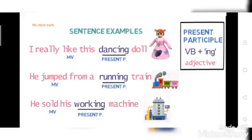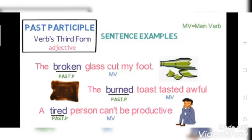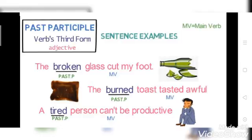And working present participle है यहाँ पे. यहाँ पे आप verb के साथ ing यूज़ कर रहे हैं, and जो verb यहाँ यूज़ होंगे वो basic form होते हैं, means root form होता है. Just last sentence में verb है work, so work plus ing — so it is your present participle. Now coming to past participle: यहाँ पे verb आपका third form में होगा, and it will function like adjective. 'The broken glass cut my foot' — broken is past participle, and cut is main verb. 'The burnt toast tasted awful' — burnt is your past participle, and tasted is main verb. 'A tired person cannot be productive' — tried क्या है, आपका past participle है, and can't है आपका main verb.